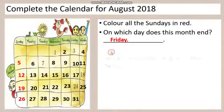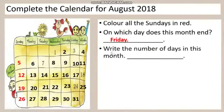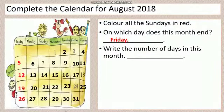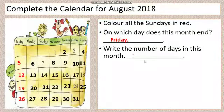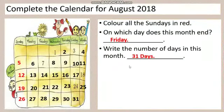Write the number of days in this month. How many days are in August? Thirty-one days. So your answer is thirty-one days. Write this answer in your textbook.